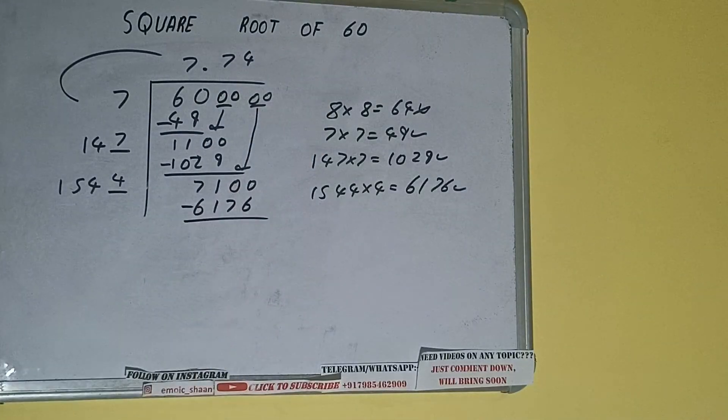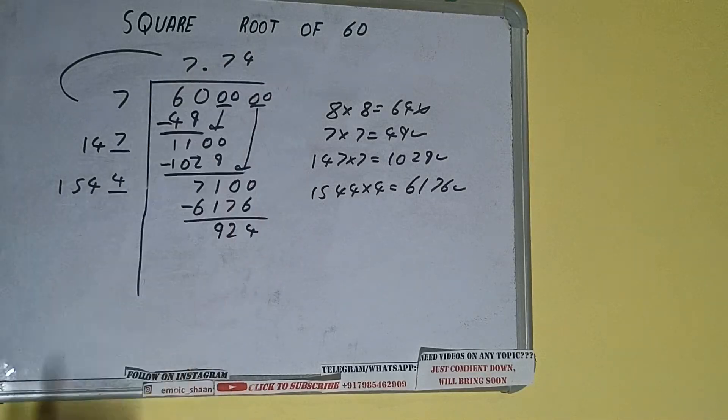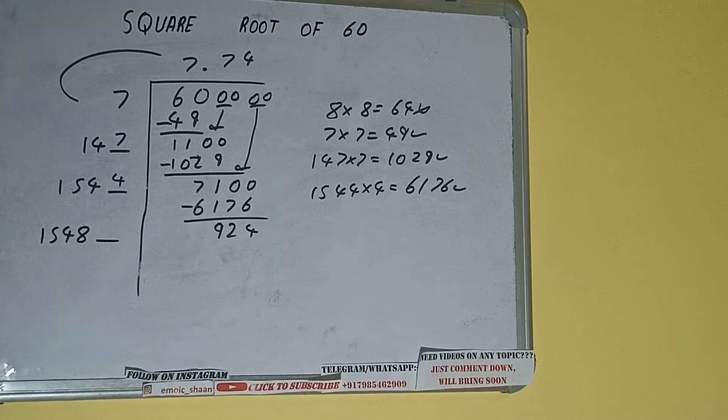Subtract, and we'll be having 924. Now 1544 into 4 we did, so add both. So 1544 plus 4 will be 1548 and 1 digit extra.